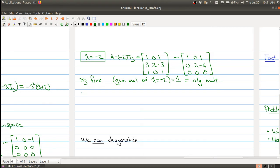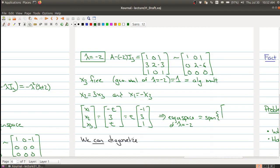We also know that x2 is equal to 3x3 and x1 is equal to negative x3, coming from those equations. Putting the pieces together, we have x1 x2 x3 is equal to t times negative 1, 3, 1, which implies that my eigenspace of lambda equals negative 2 is the span of the vector negative 1, 3, and 1.